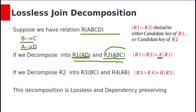And we can decompose this relation 2 into 2 relations with BC and AB. Here also we have common attribute B which makes it lossless join decomposition.